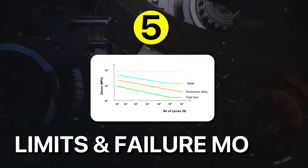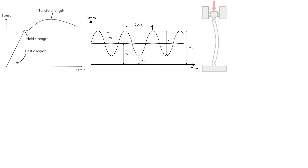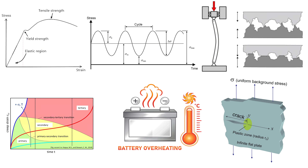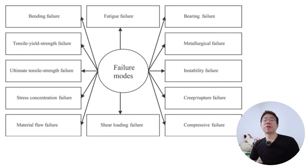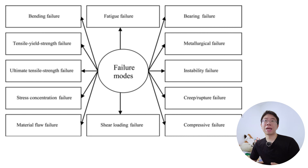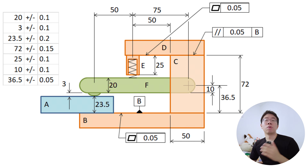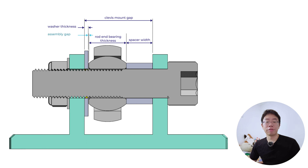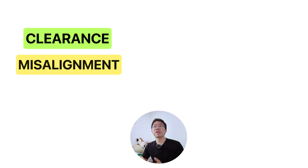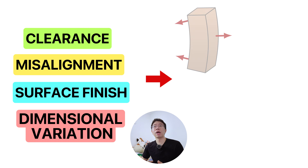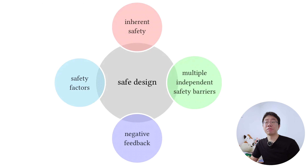The fifth idea is limits and failure modes. Every mechanical system operates within limits. Yielding, fatigue, buckling, wear, creep, overheating, fracture, and instability define the boundaries of acceptable operation. An experienced mechanical engineer understands which failure mode governs the design and ensures adequate margin relative to that limit. A component may be strong enough in static loading but fail in fatigue. A structure may meet stress limits but buckle. A thermal system may perform well initially but degrade due to overheating over time. Real systems' tolerances are part of these limits — a design that works analytically but fails when tolerances stack up is not robust. Clearances, misalignment, surface finish, and dimensional variation directly affect stress, wear, vibration, and thermal performance. Understanding limits informs safety factors, inspection intervals, material selection, and operating envelopes. Limits determine whether a design is acceptable, robust, and reliable.